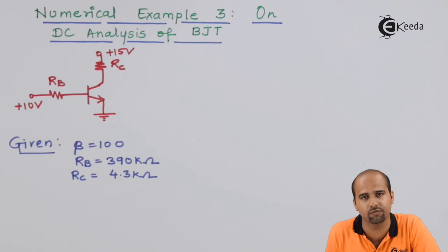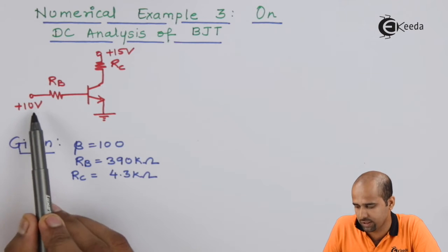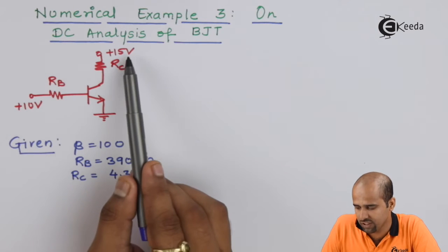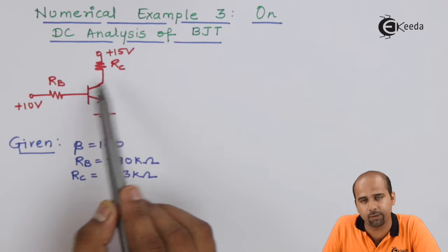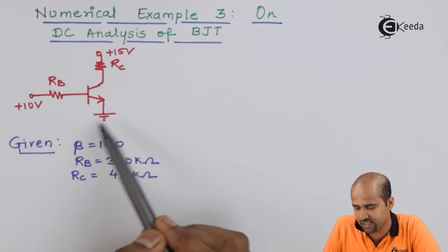This is the circuit given for this numerical. 10 volts is applied to RB and 15 volts is applied to RC, connected to collector and base respectively. Emitter is directly grounded.